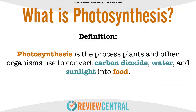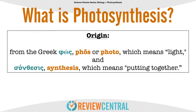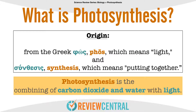By definition, photosynthesis is the process plants and other organisms use to convert carbon dioxide, water, and sunlight into food. Photosynthesis may seem like a big word, but it's easier to understand if you remember that it's two Greek words put together. The word photo means light and the word synthesis means putting together or to combine things. So photosynthesis is the combining of carbon dioxide and water with light.